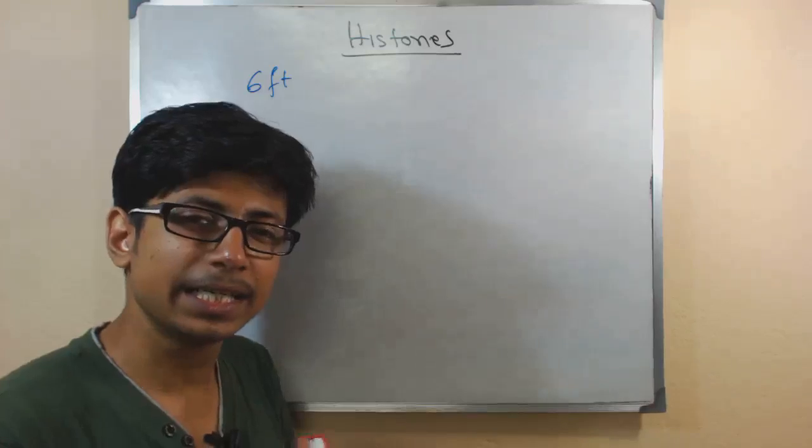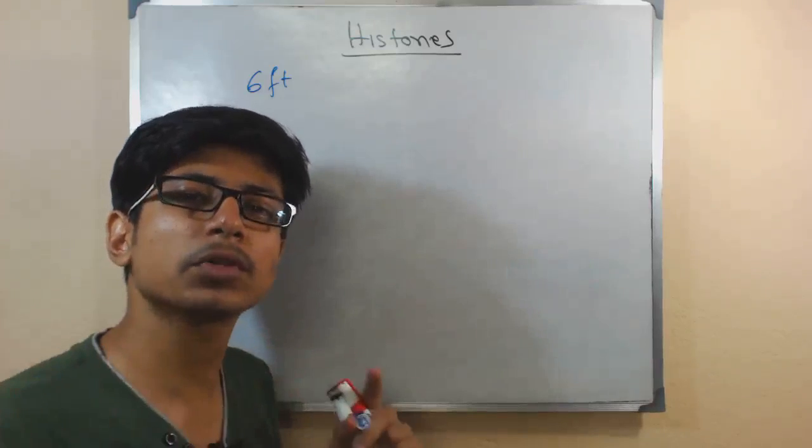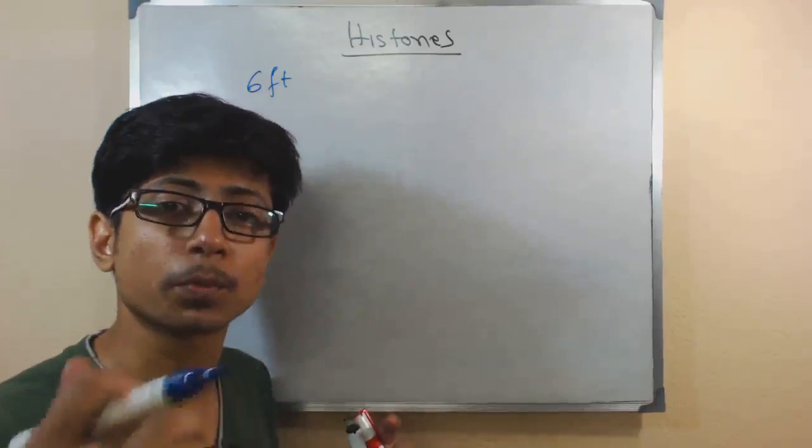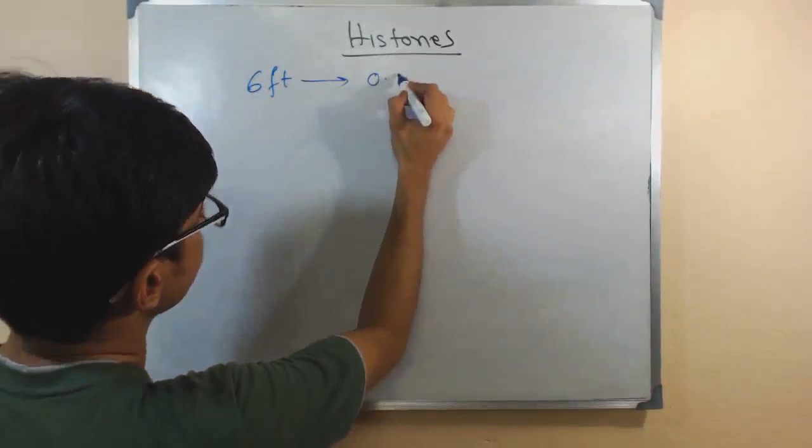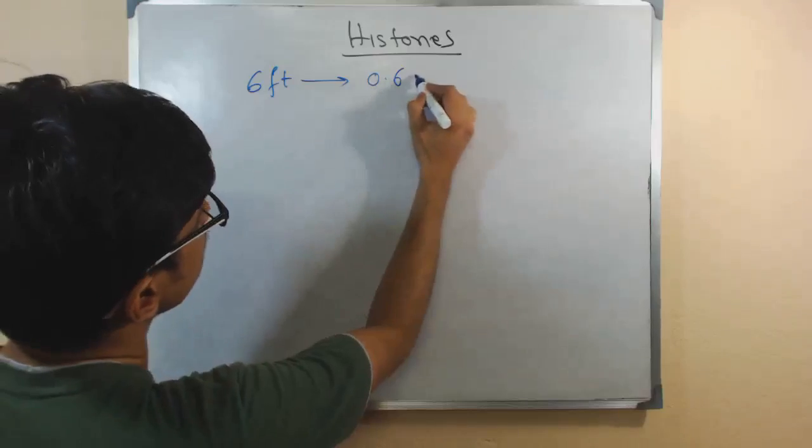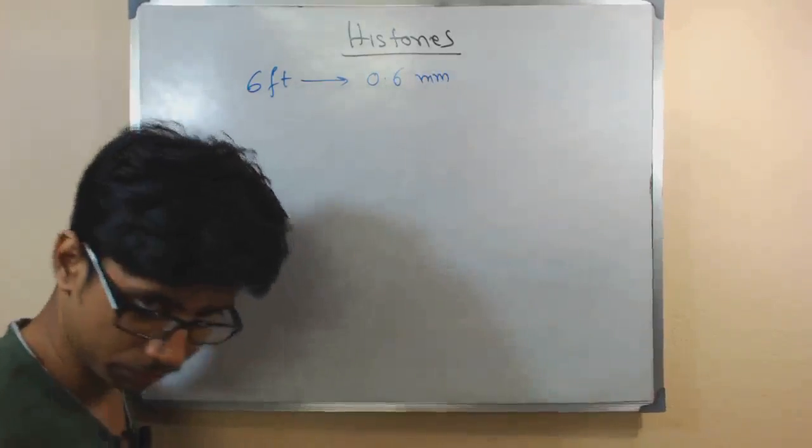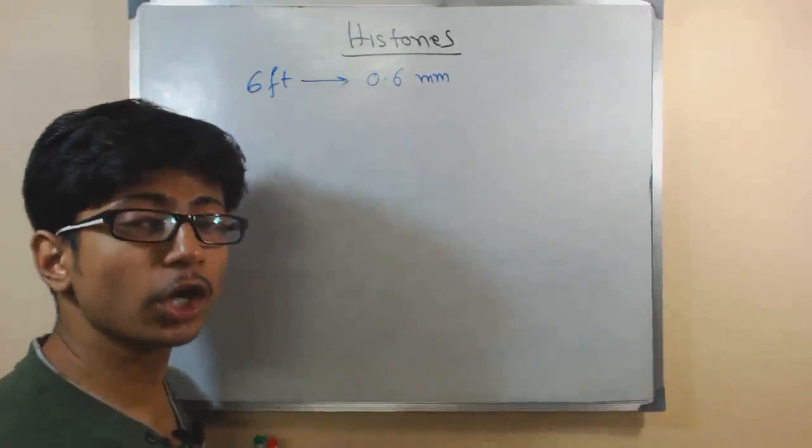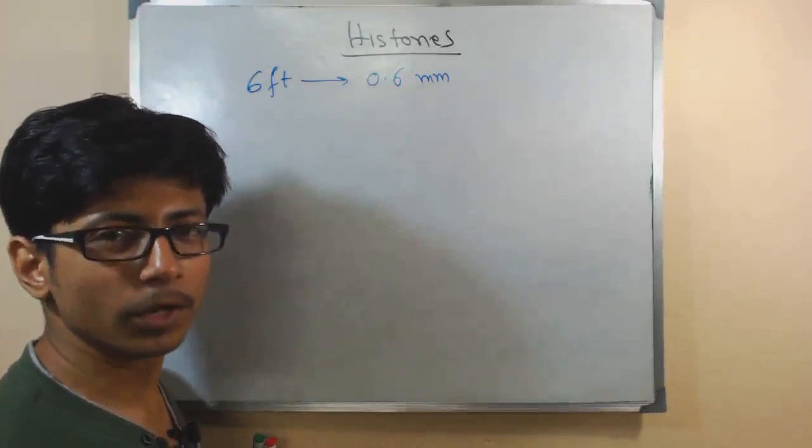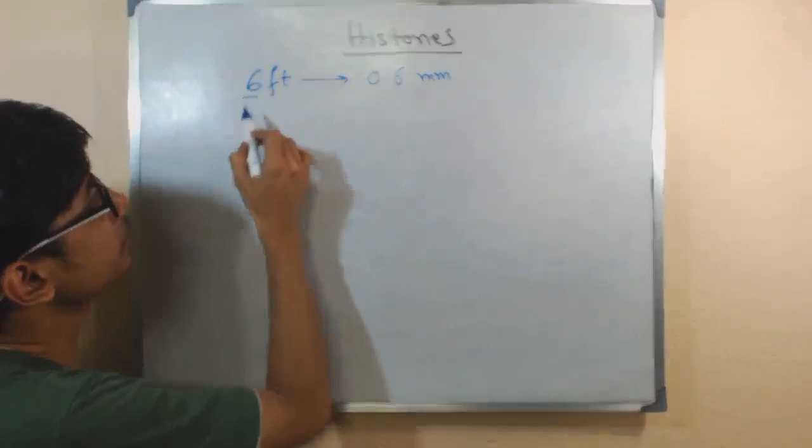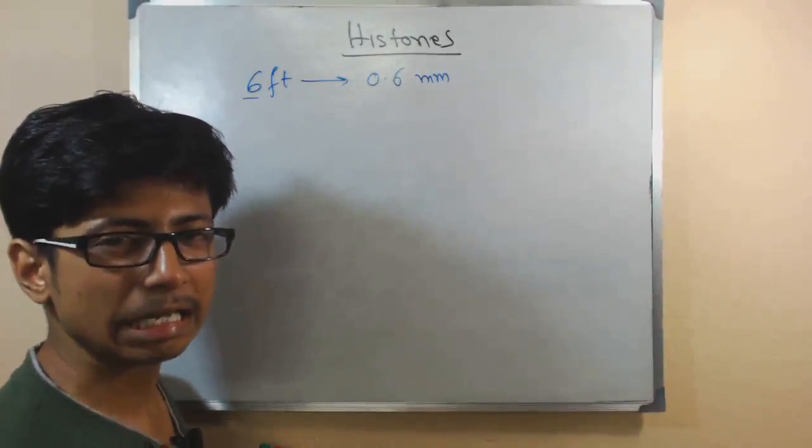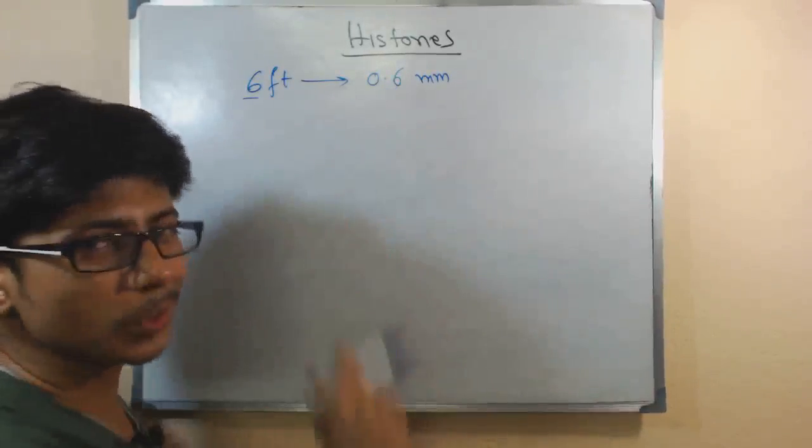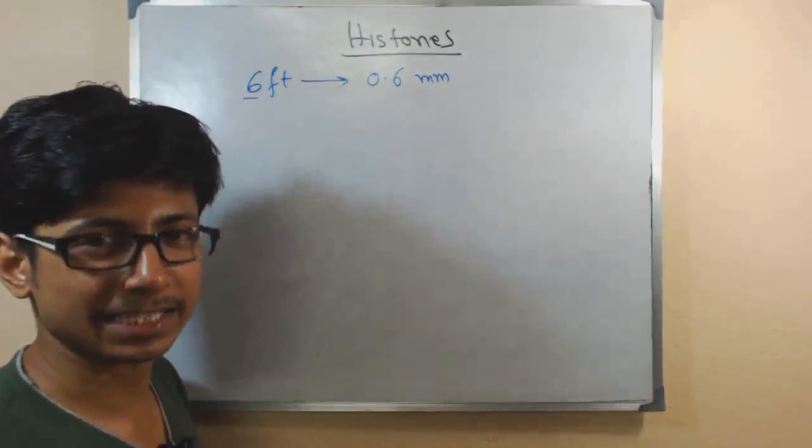To do this, the only way is to compress the DNA structure in such a way that in a tiny cell that huge amount of DNA can be stored properly. 0.6 millimeter is the condensed form of the DNA when it goes from six feet, and after condensation it will have 0.6 millimeter length only and then it can definitely be stored inside the eukaryotic cell.